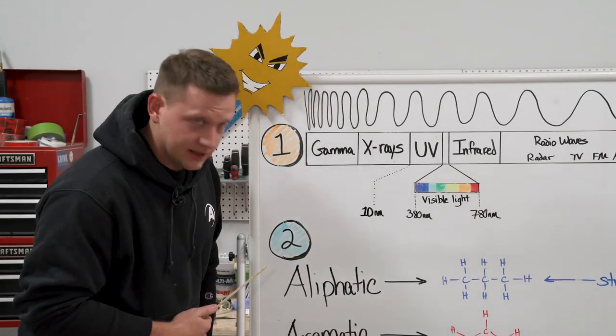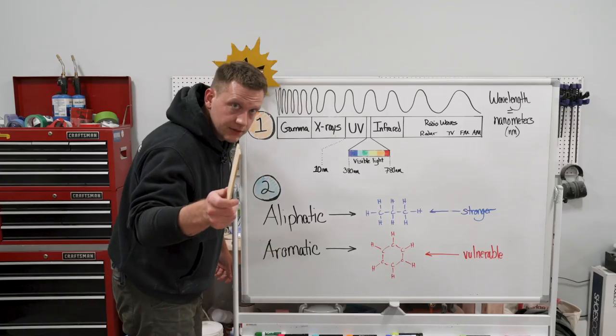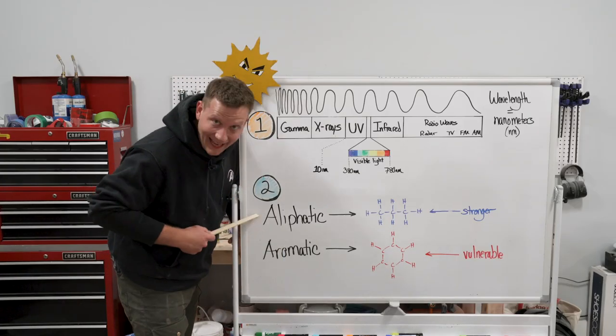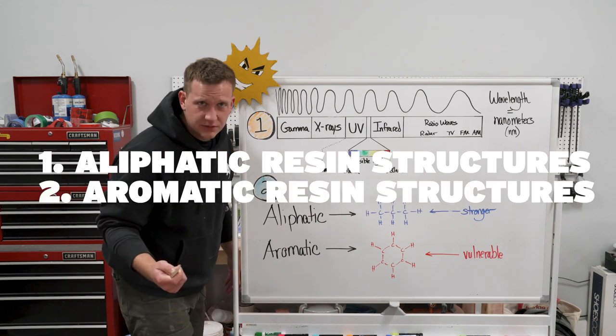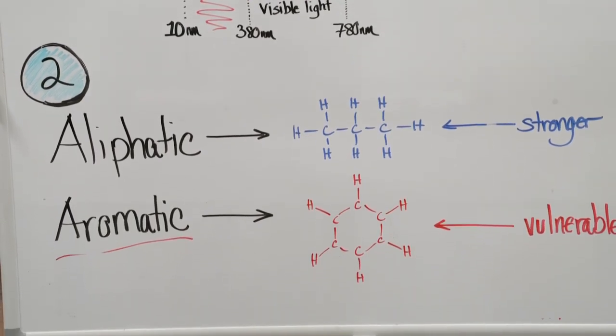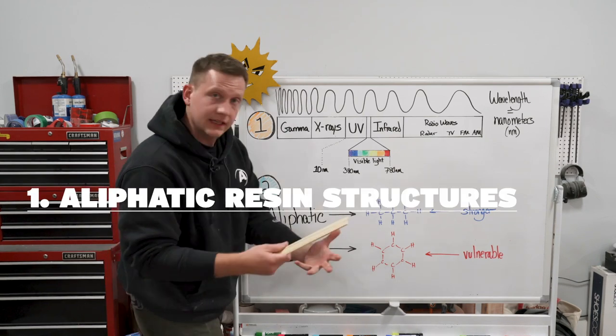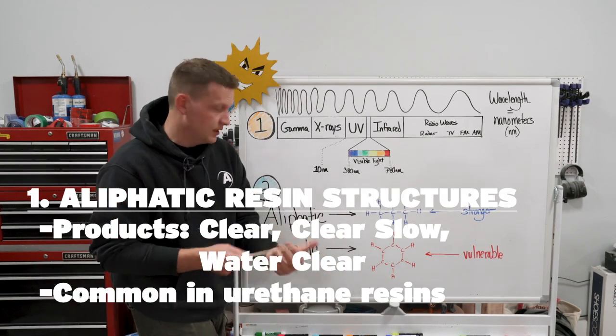Let's talk about the second thing we need to know: the structure of the resin molecules themselves. Two types of resin structures to be aware of. First, aliphatic — linear structures, the chain is straight-lined, so to speak, and those are stronger. You get a lot of aliphatics in our ClearCast and ClearCast Slow products — those are our urethane resins. Aliphatic epoxies do exist, but they have very limited uses. The chemicals involved make them not so FDA compliant, not so friendly for common projects, and their physical properties aren't as good either.